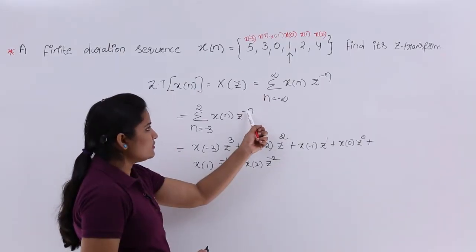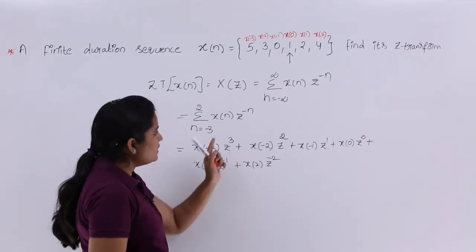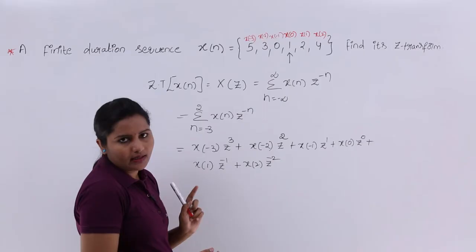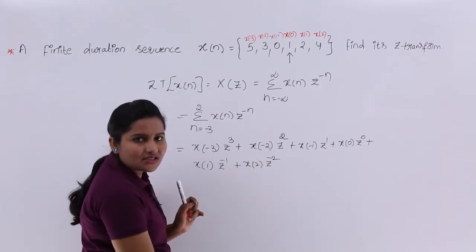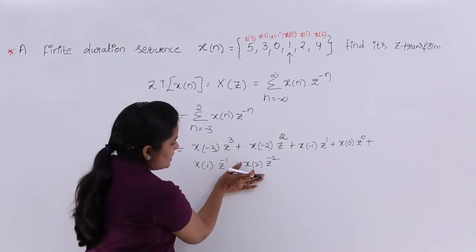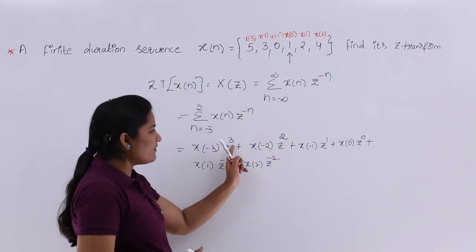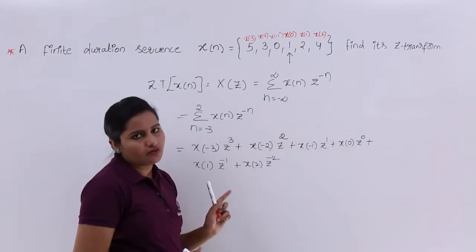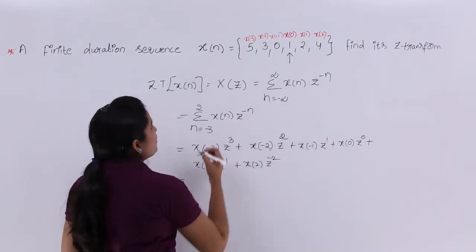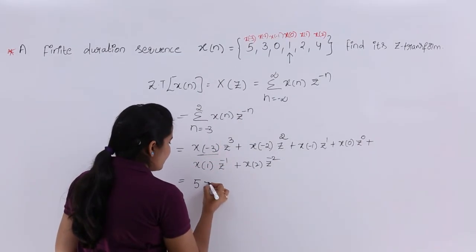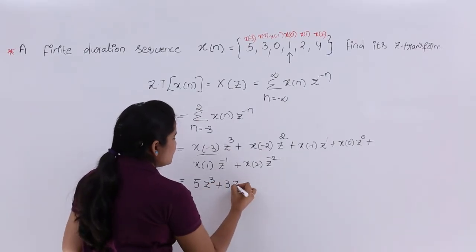You need to substitute in terms of n. Please keep in mind: all right-sided sequences have Z power negative values, and all left-sided sequences have Z power positive values. So here, X of minus 3 has value 5, giving 5Z cube; X of minus 2 has value 3, giving 3Z square; X of minus 1 has value 0.